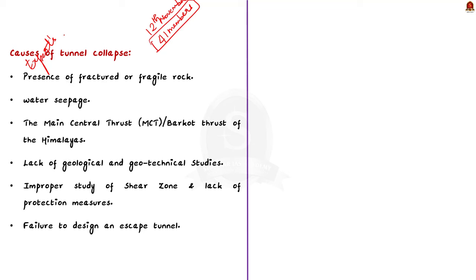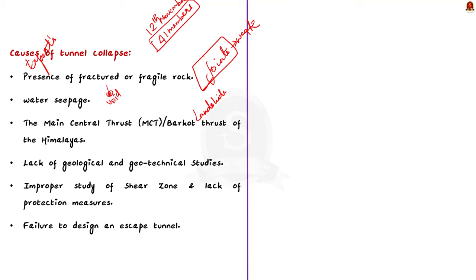First, the presence of fractured or fragile rock — fractured rock has many joints making it weak to sustain large overhead weight, which could have led to the collapse. Second, water seepage erodes loose rock particles over time, creating a void on top of the tunnel and possibly leading to caving. Third, the landslide-prone young Himalayan rock system: the Main Central Thrust (MCT) passes a few kilometers north and northwest of the incident site, and seismic waves generated could have triggered a possible landslide.